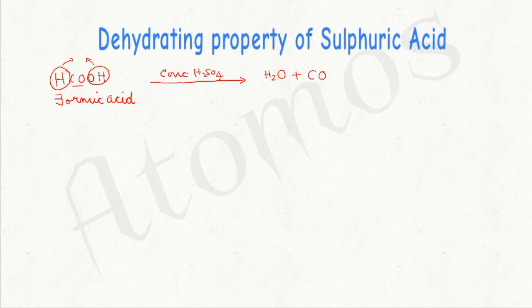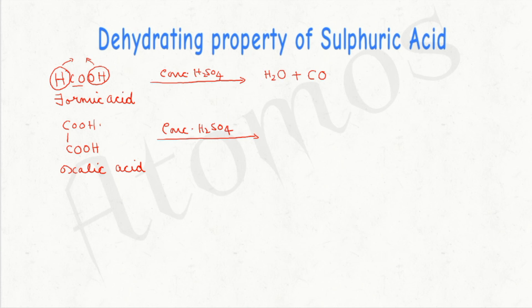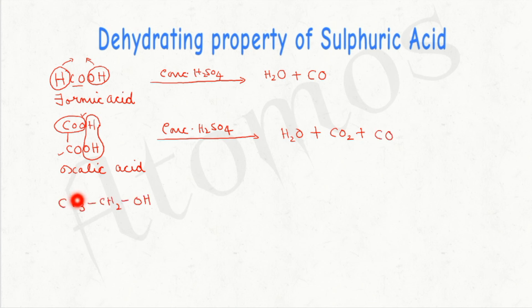Another example: oxalic acid, which is two carboxylic acid units joined together. When oxalic acid is treated with concentrated sulfuric acid, it removes the H and OH, so one product obtained is water. The other gases formed are carbon dioxide along with carbon monoxide.